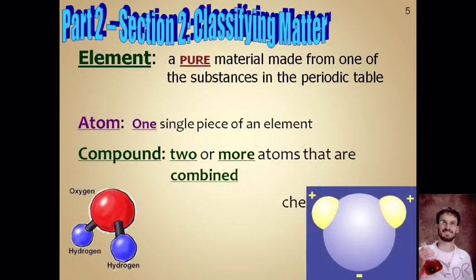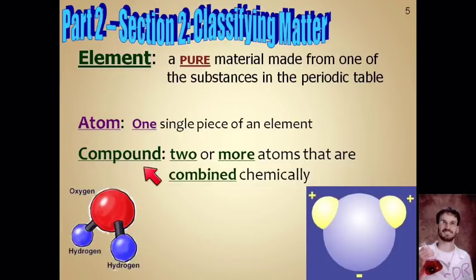Now if we start joining atoms together, we make something called a compound. It's two or more atoms that are combined chemically. When you join things chemically, they actually end up sticking together and there's a part of that atom, the electrons, that are interacting with each other. When they join that way, when they combine with their electrons, they become a compound.